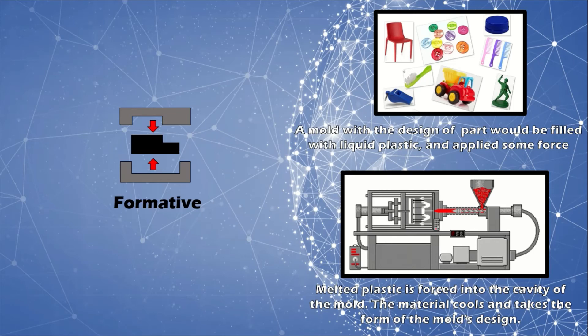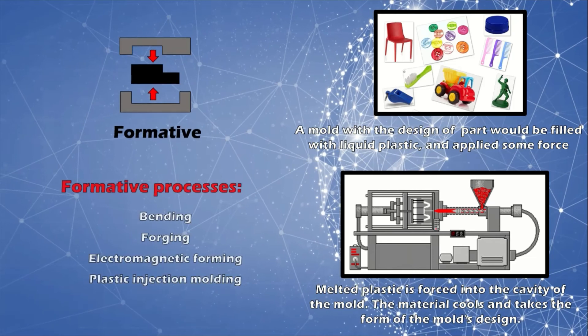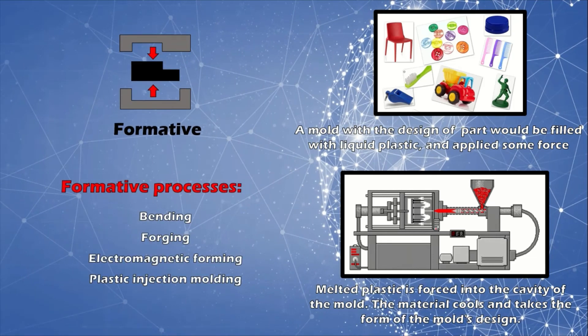Examples of formative fabrication processes are bending, forging, electromagnetic forming, and plastic injection molding. These include both bending of sheet materials and molding of molten or curable liquids.